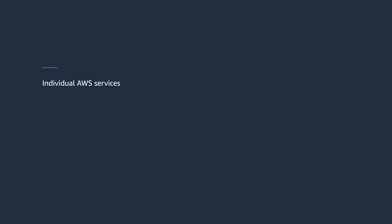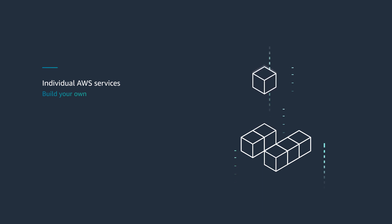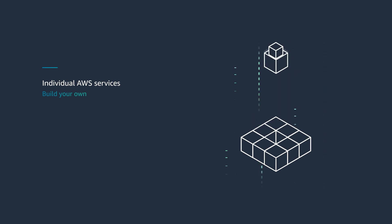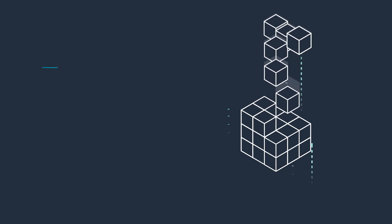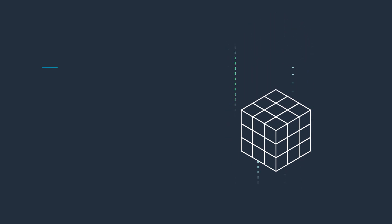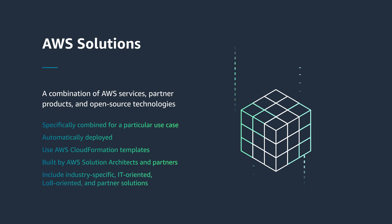Now that you understand how to reduce operational cost using individual AWS services like AWS Lambda and Amazon DynamoDB, building your own solution requires you to configure multiple services and manage the deployment. Often, customers ask me: is there an easy way to deploy an end-to-end solution? And yes, AWS Solutions is an open-source library to help you build faster with the AWS platform.